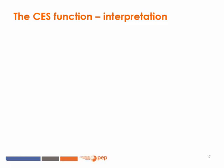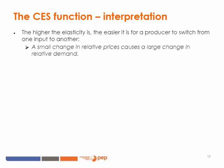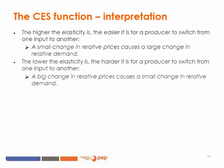The modeler must keep in mind the interpretation of using a CES function. The reaction of the producer will depend on the value of the elasticity. The higher the elasticity is, the easier it will be for a producer to switch from one input to the other — a small change in relative prices will cause a large change in relative demand. On the opposite, the lower the elasticity is, the harder it is to switch — a large change in relative prices will only cause a small change in relative demand. There are two specific cases of the CES function widely used in CGE models: when the elasticity tends towards zero (perfect complementarity, the Léontief function), and when the elasticity tends towards one (the Cobb-Douglas function).